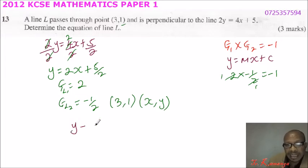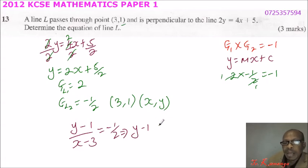So we say y minus 1 divide by x minus 3 should be equals to the gradient which is minus 1 half. So we cross multiply, we say y minus 1, this implies that y minus 1 equals, multiply x times 1 half, it is minus 1 half x, multiply minus 3 times minus 1 half, that will give you plus 3 over 2.